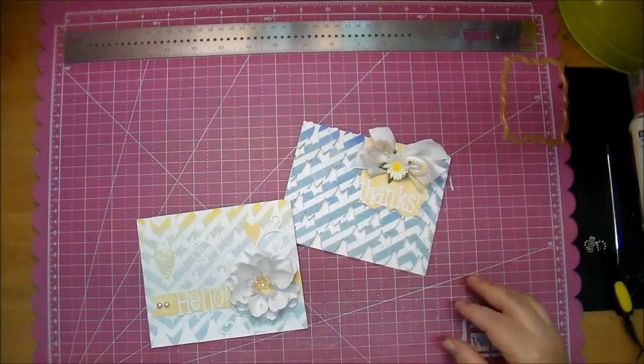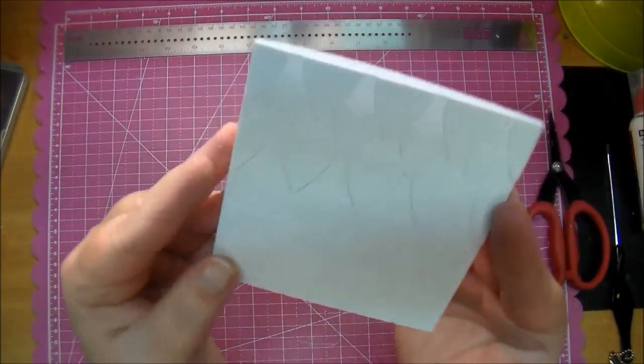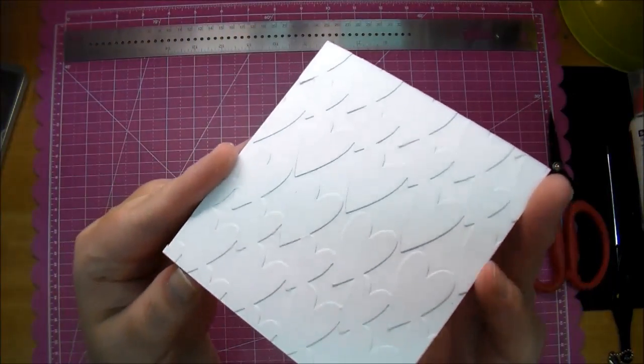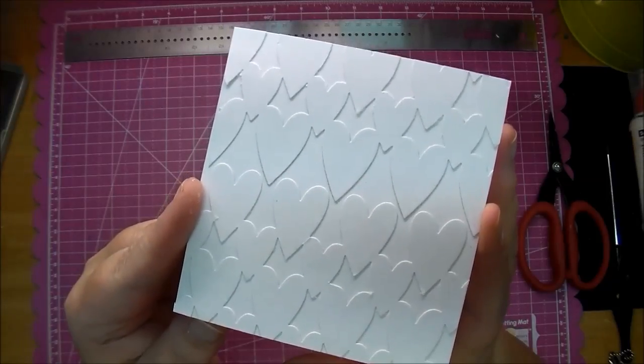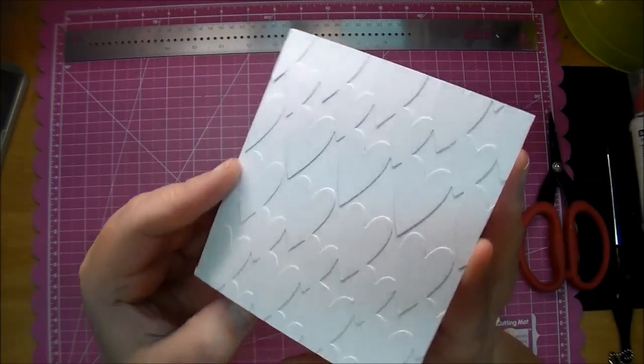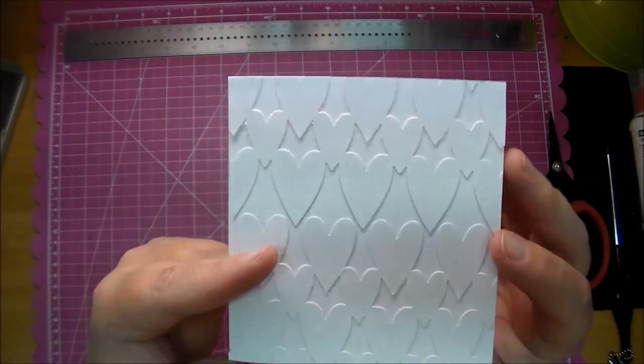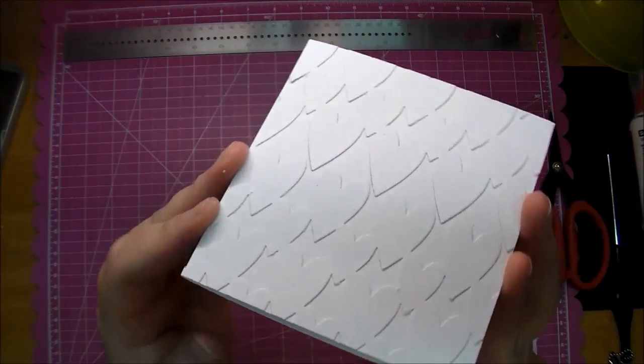Now the last card—again I did this off camera—I just cut out some white hearts, added it to a 4x4 white cardstock. So it's just a little note card. Glued it all down and cut off the edges just like you've seen me do.